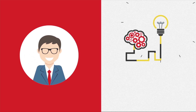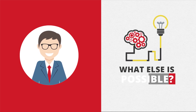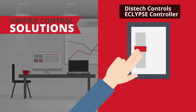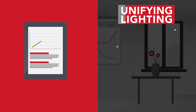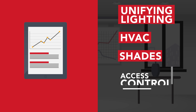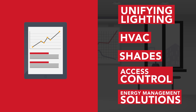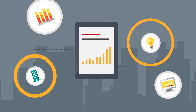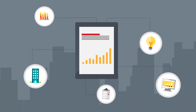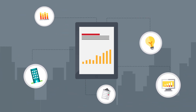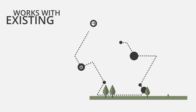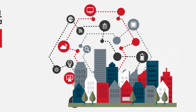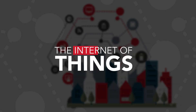Gerald is impressed with smart lighting, and he's curious about what else might be possible. Bob informs him that Acuity offers a complete solution for unifying lighting, HVAC, shades, access control, and energy management. Based on truly open standards, the innovative, cost-effective building and energy management system simplifies building control by using a single platform, and works with existing building systems, ensuring interoperability and making the facility ready for the internet of things.